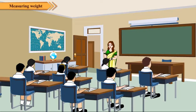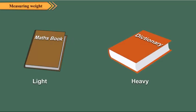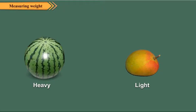Sometimes you can tell if the thing is heavy or light just by observing it. See, your maths book is lighter than a dictionary. A watermelon is heavier than a mango.